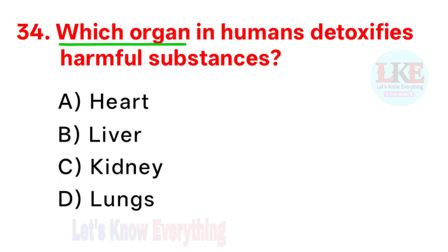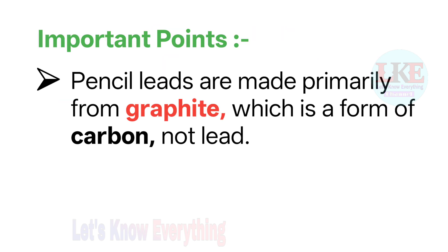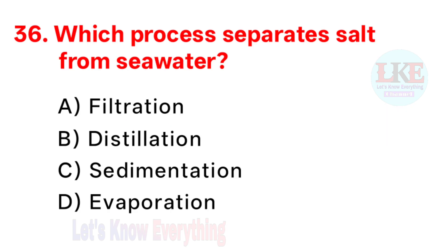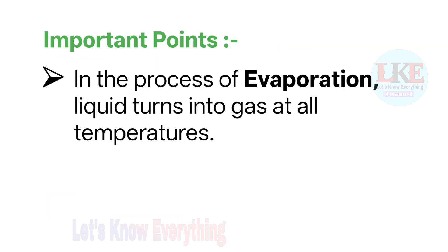Question number 34: which organ in humans detoxifies harmful substances? Right answer option B: liver. Question number 35: which element is used in making pencil leads? Right answer option A: graphite. Pencil leads are made primarily from graphite, which is a form of carbon, not lead. Question number 36: which process separates salt from sea water? Right answer option D: evaporation. In the process of evaporation, liquid turns into gas at all temperatures.